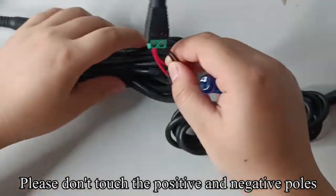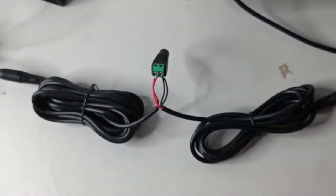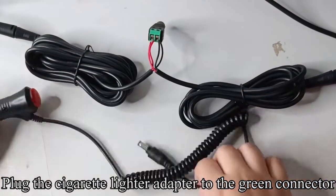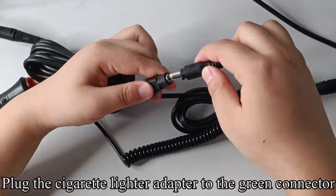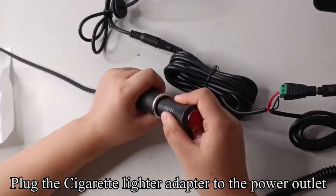Please don't touch the positive and negative poles. Plug the cigarette lighter adapter to the green connector. Plug the cigarette lighter adapter to the power outlet.